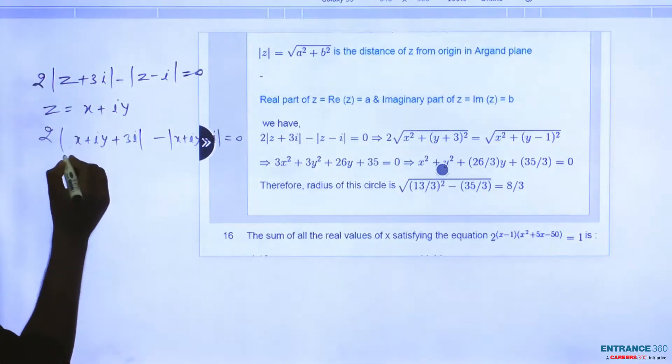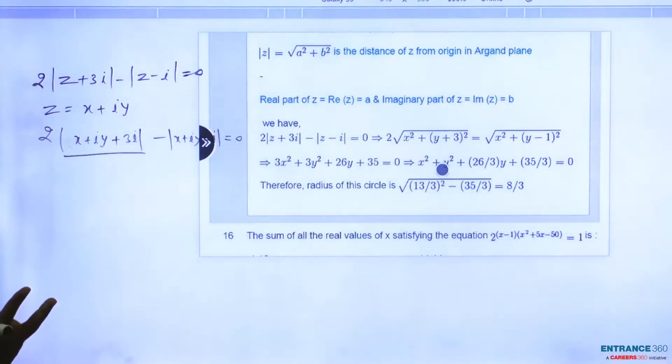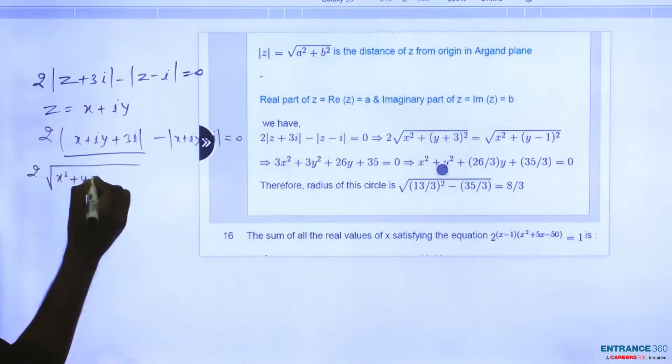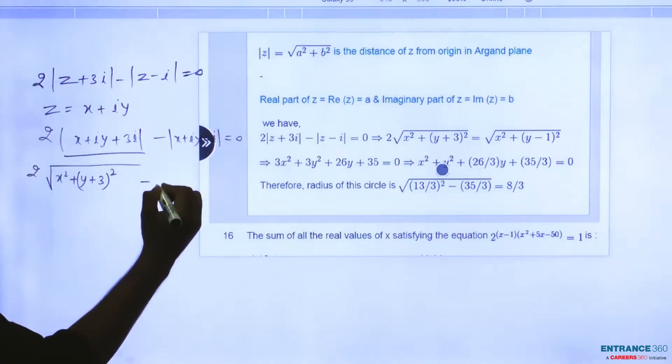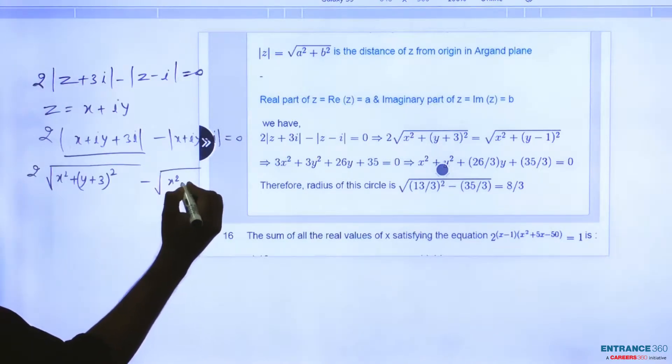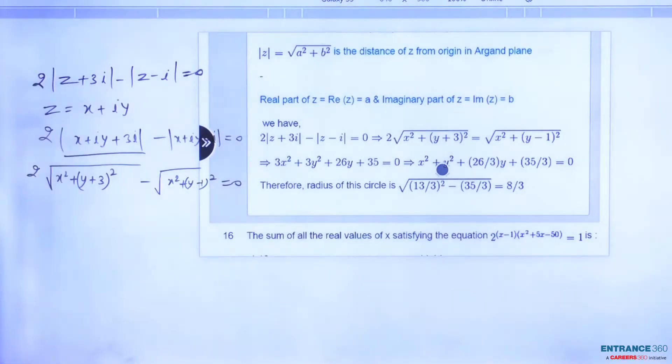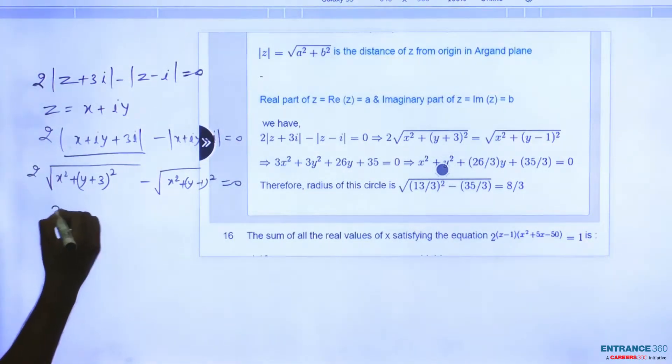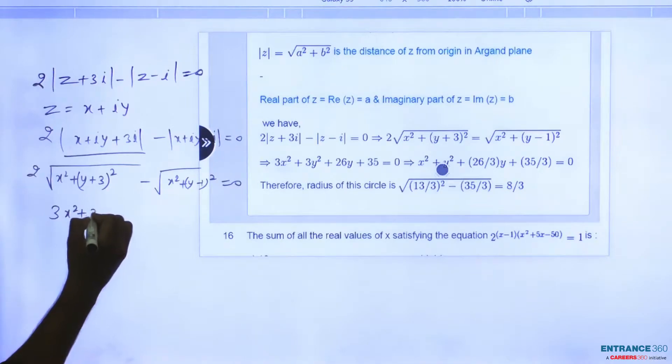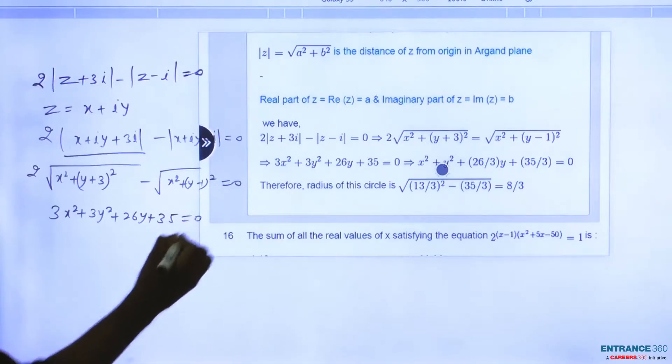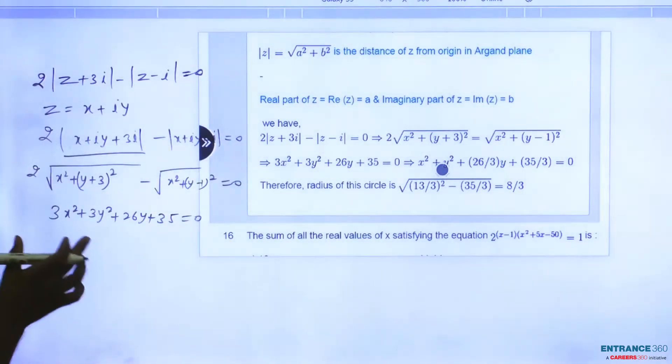Then you will get x plus iy plus 3i minus x plus iy minus i equal to 0. This is the distance between two complex numbers. Then you have to write x squared plus (y plus 3) whole squared minus x squared plus (y minus 1) squared equal to 0. Then you will find 3y squared plus 26y plus 35 equal to 0. After solving this equation, you will find this equation.